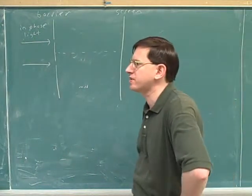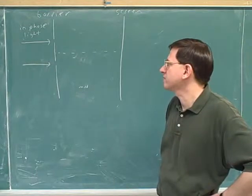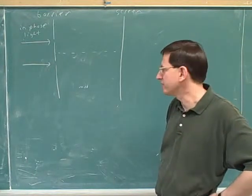So what we were just talking about was interference that occurs in a thin film, and now we're going to talk about interference that occurs with the double slit experiment.